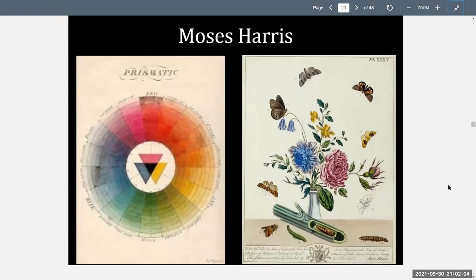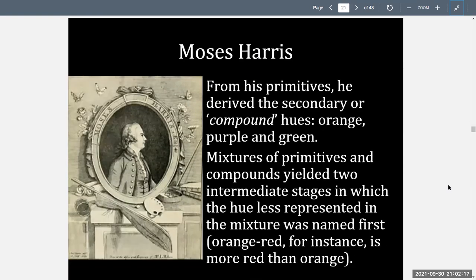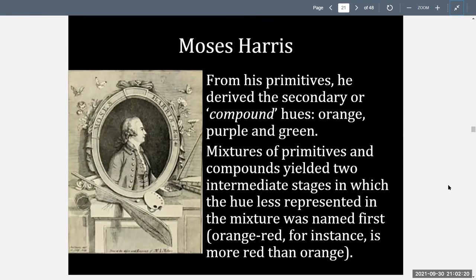Off to the right is an example of his work — his botanical observations, his moths and butterflies, and his beautiful use of color to illustrate both. From his primitives, he derived the secondary or compound hues of orange, purple, and green. Mixtures of primaries and compounds yielded two intermediate stages in which the hue less represented in the mixture was named first — so orange-red, for instance, is a more red than orange color. This gives us arrangements such as blue-green, blue-violet, red-violet, and so on.